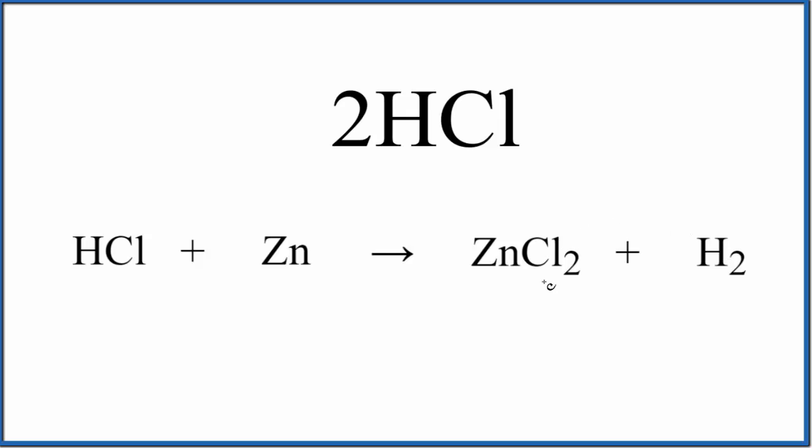You can see there's two chlorines here and only one right here, so we could put a coefficient of two in front of the HCl. Now we have two hydrogens and two chlorine atoms. Over here in the products we have our two chlorines and two hydrogens, so we've balanced this equation.